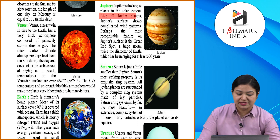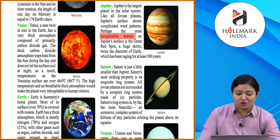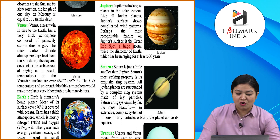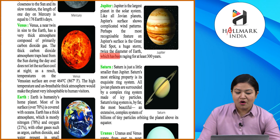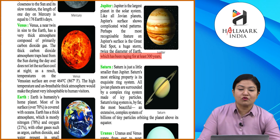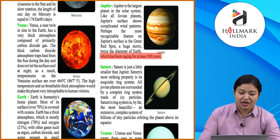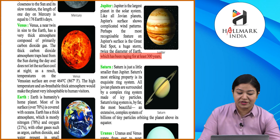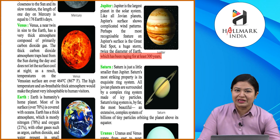Jupiter is the largest planet in the solar system. Like all Jovian planets, Jupiter's surface shows complicated wind patterns. Perhaps the most recognizable feature on Jupiter's surface is the Great Red Spot — a huge storm twice the diameter of Earth, which has been raging for at least 300 years. Jupiter's surface displays very complicated wind patterns similar to other Jovian planets.